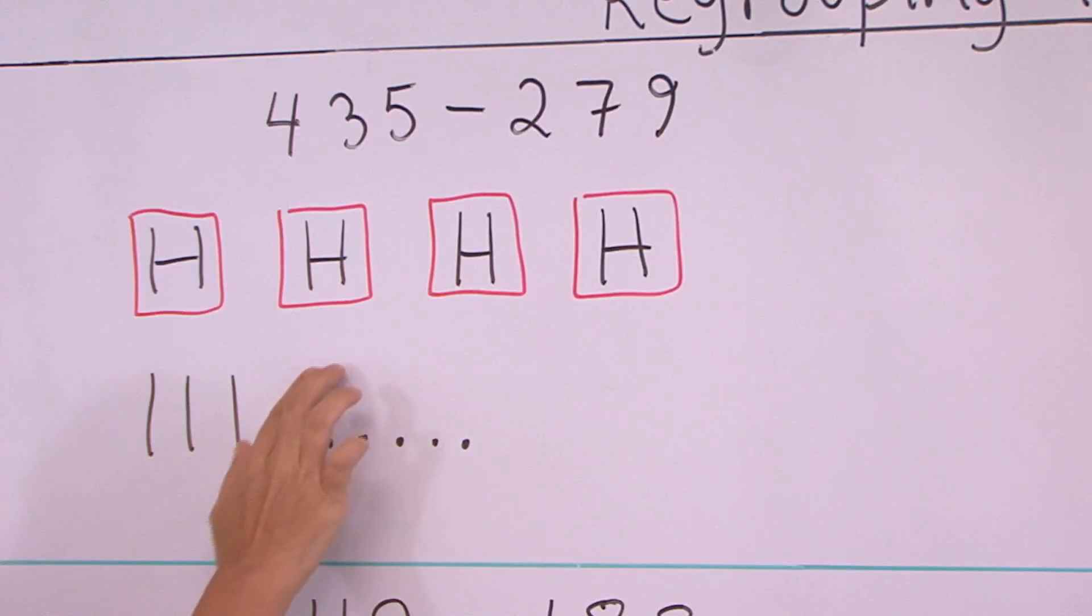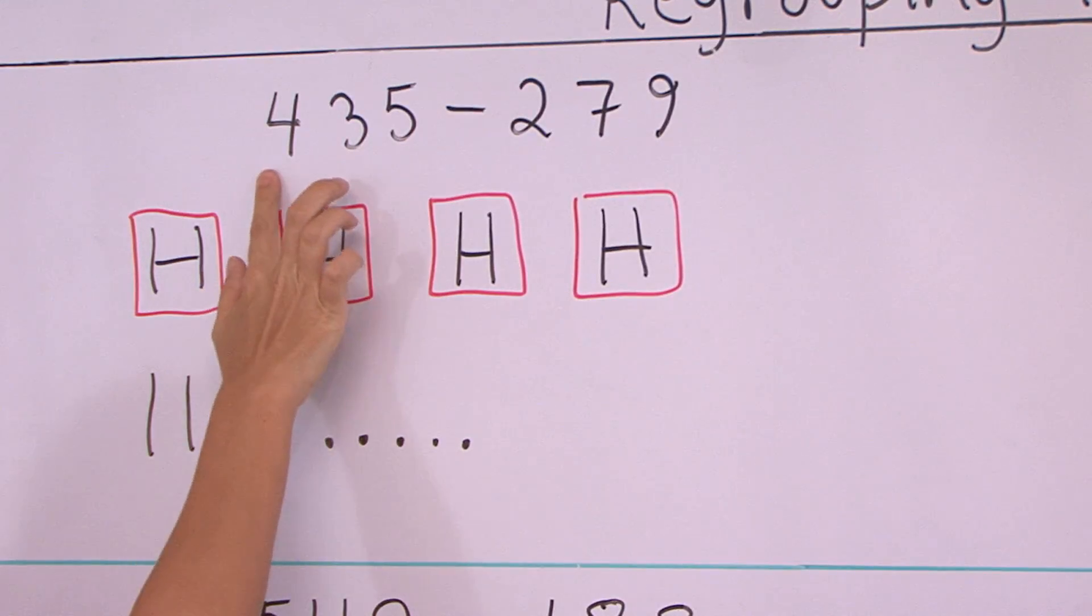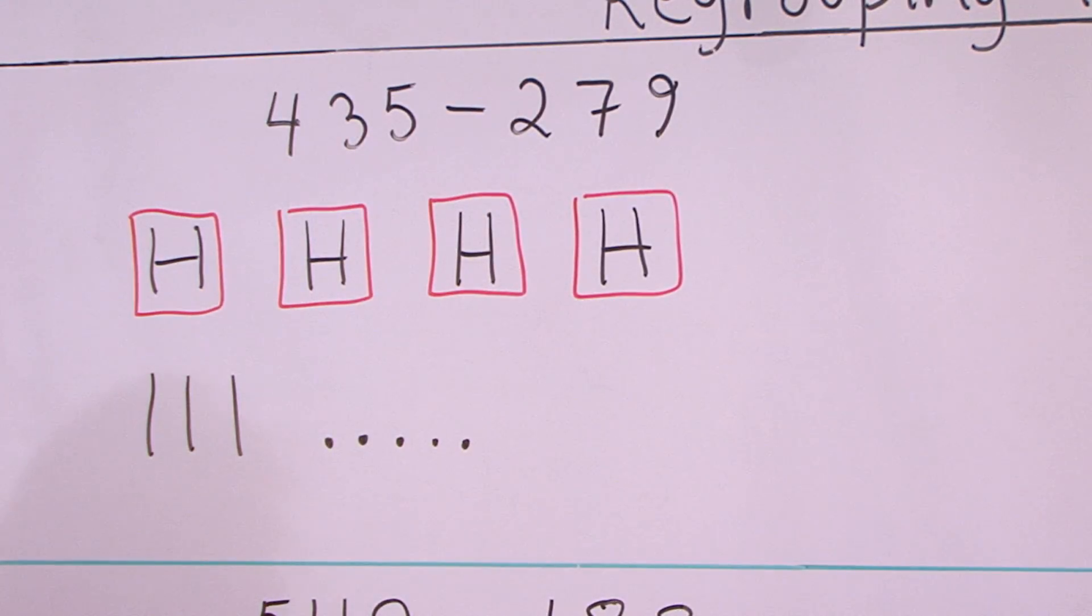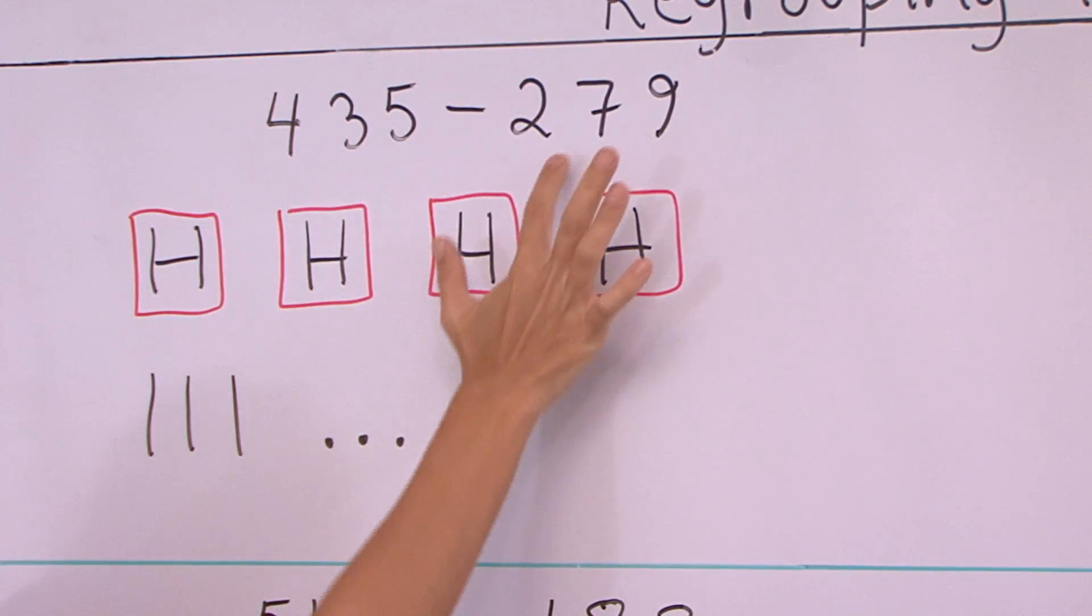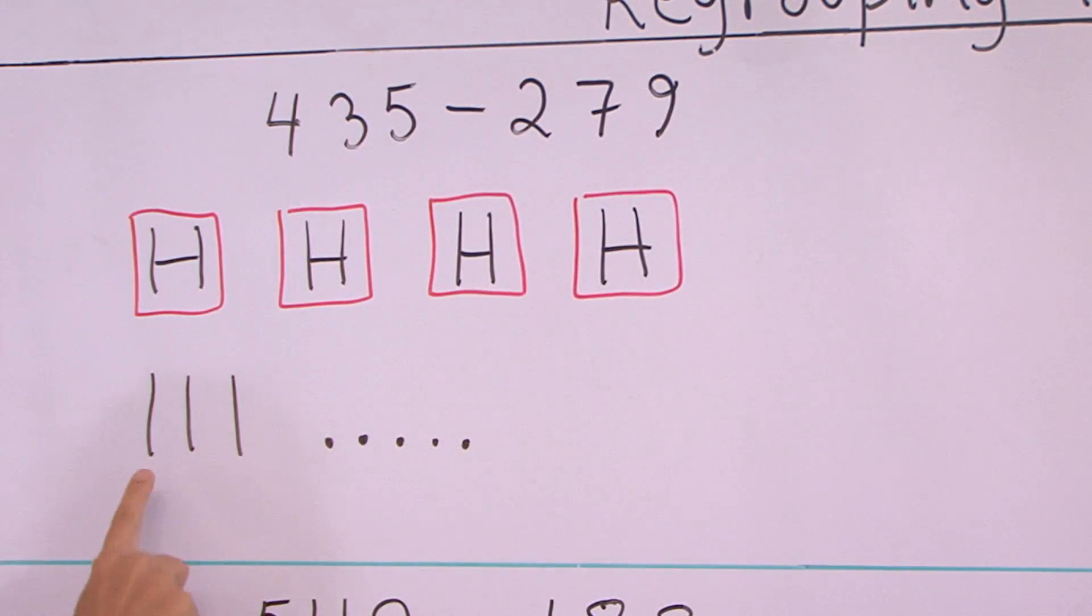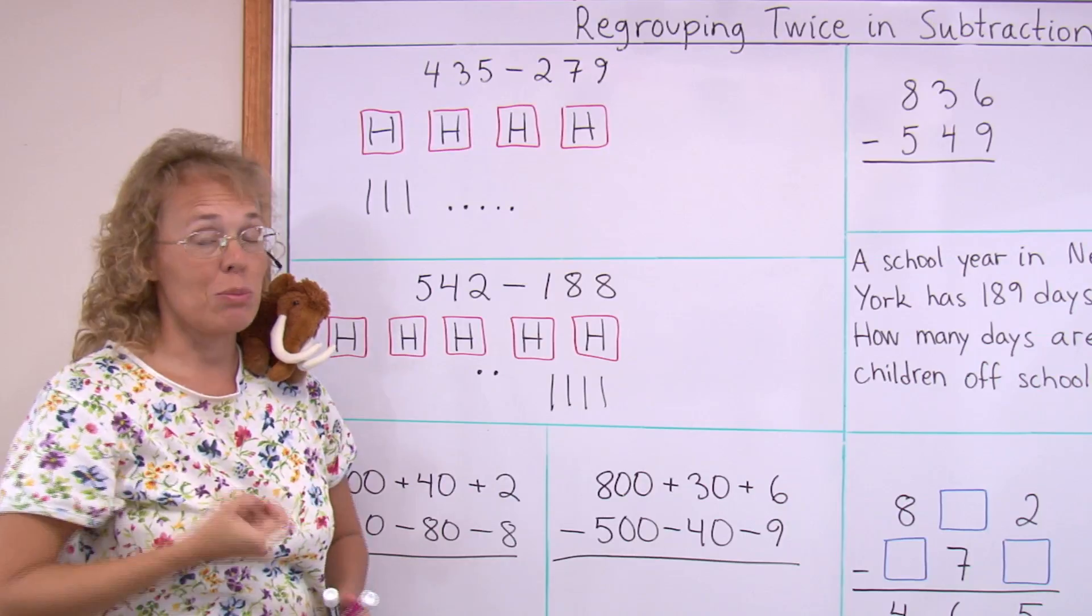Here's my first problem, it is 435 minus 279. I have here 435 modelled with these hundreds and tens and ones. And we need to take away or cross out 200, that would be no problem, 79. But there's not seven tens here and there's not nine ones here to subtract.